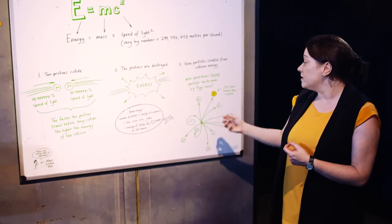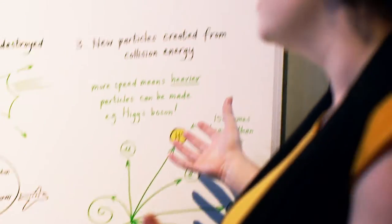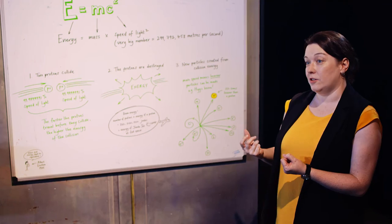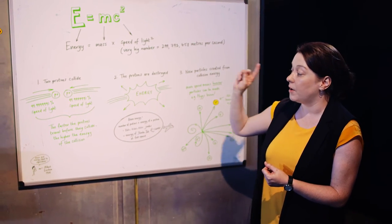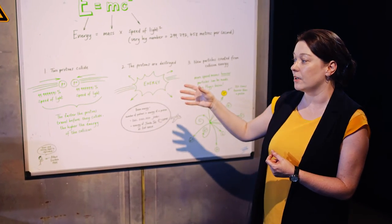To get interesting new particles and big particles like the Higgs boson, we need a lot of energy going into that collision, which means we need the particles to be going as fast as we can get them before they collide.